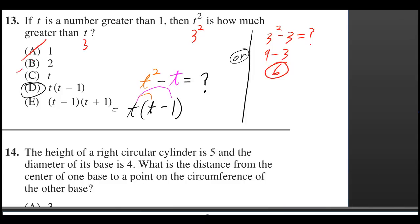Which is certainly not one. It's certainly not two. Is it t? Well t in this case was three. No, it's not t either.